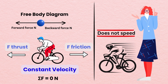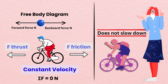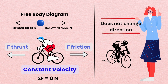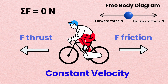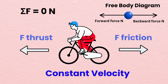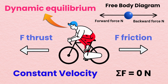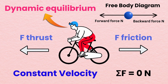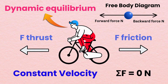It means that Isaac does not speed up, slow down, or change direction. Instead, Isaac is a body in motion and he stays in motion at a constant velocity. So an object is in dynamic equilibrium when it is moving at a constant velocity.